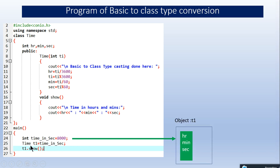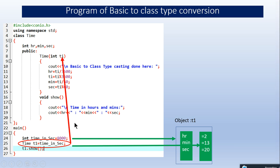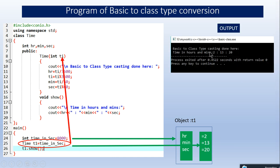When I declare the object t1, it has three variables: hours, minutes, and seconds. When I write the line 'time t1 equals time_in_seconds', this value of 8000 is passed as an argument to the time constructor and copied to ti. I then calculate ti divided by 3600 to get hours, then compute the remainder seconds, and divide by 60 to get minutes and seconds. After this, 8000 seconds is converted into 2 hours, 13 minutes, and 20 seconds, as shown in the output. The integer time_in_seconds is copied to the t1 object — this is a basic to class data type conversion.